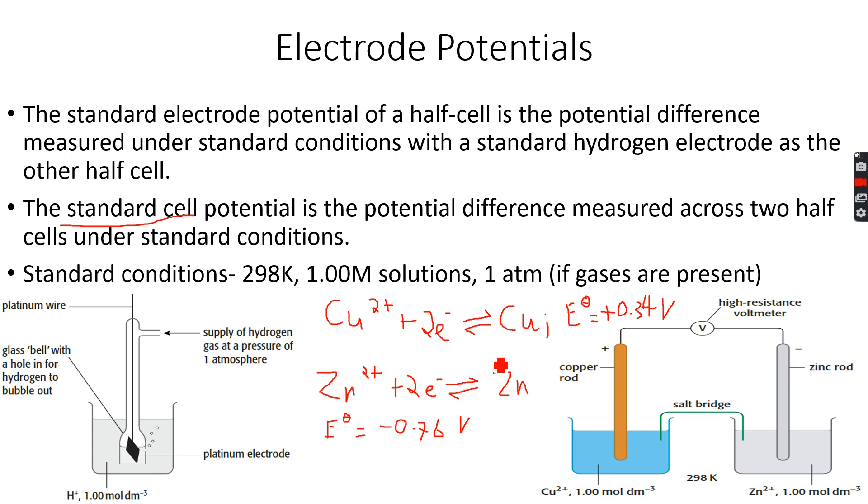When we calculate this value, the value that we get on the voltage, what we do is if whatever value is lower—not negative, but whatever value is the lower value—in this case minus 0.76, because it is negative and 0.34 is positive, whatever is the lower value, we have to switch the equation.